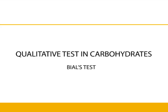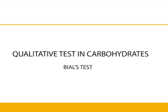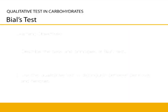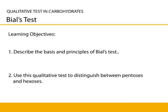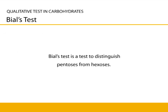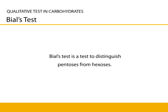Qualitative Test in Carbohydrates: Bial's Test. By the end of this exercise, the student should be able to describe the basis and principles of Bial's test and use this qualitative test to distinguish pentoses from hexoses. Bial's Test is a test to distinguish pentoses from hexoses.